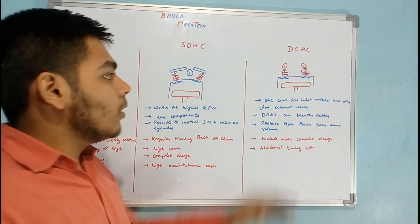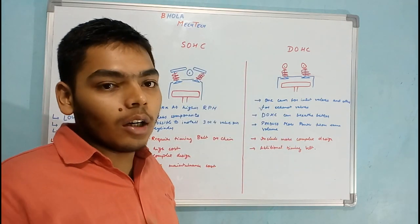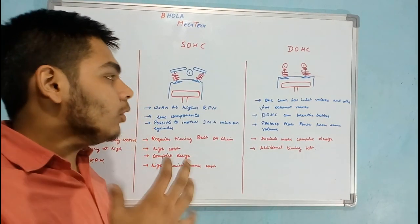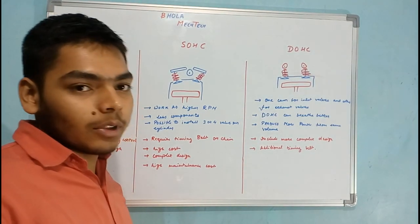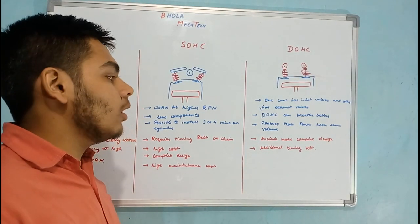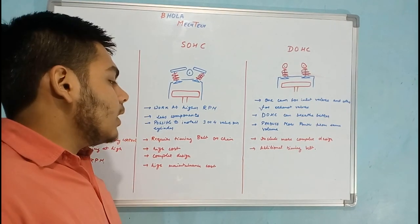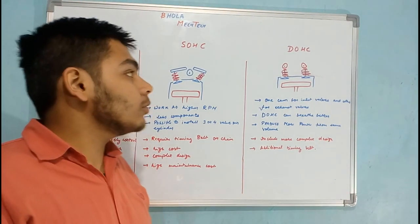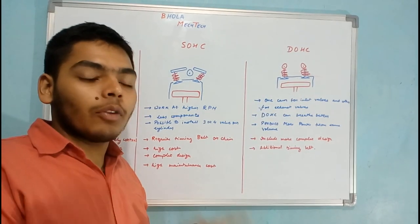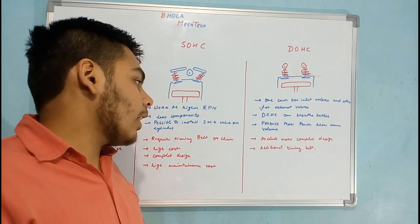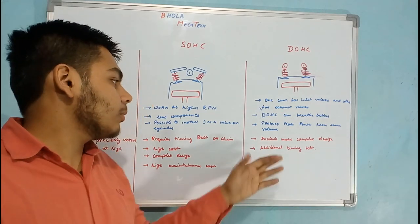The disadvantages of DOHC include a much more complex design — if you open the cylinder head you can see two cams, all the valve springs, and associated components making it very complex. An additional timing belt is also required because to achieve different timing for each cam you need to change the belt timing from the crankshaft.